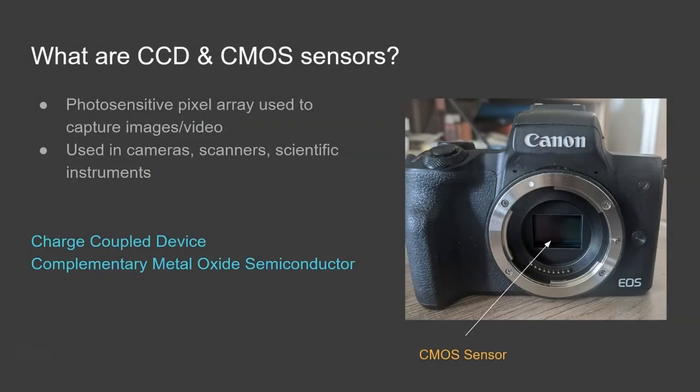So what are CCD and CMOS sensors? Well they're the sensor inside of your digital camera or scanner or other device that's used to record light data. It uses a photosensitive pixel array and they're used to capture still images or video. Now they both have the same outcome but they use slightly different technologies. CCD stands for charge coupled device and CMOS stands for complementary metal oxide semiconductor. They work in slightly different ways which we'll have a look at in a little bit.